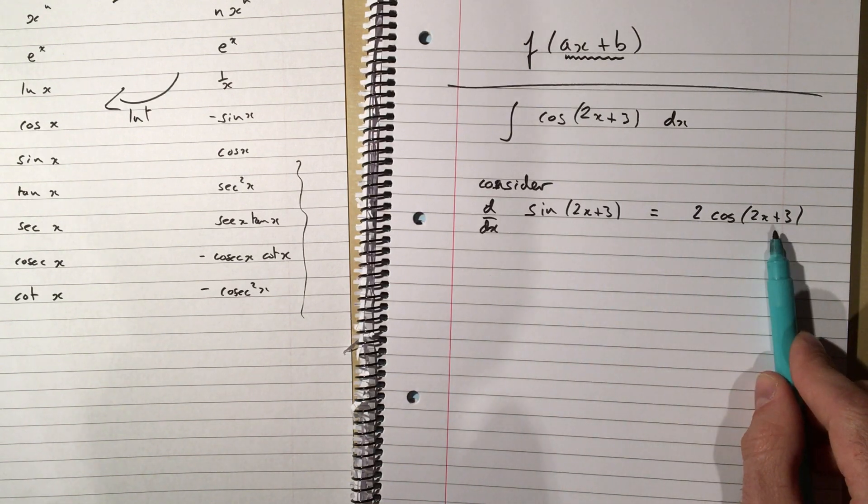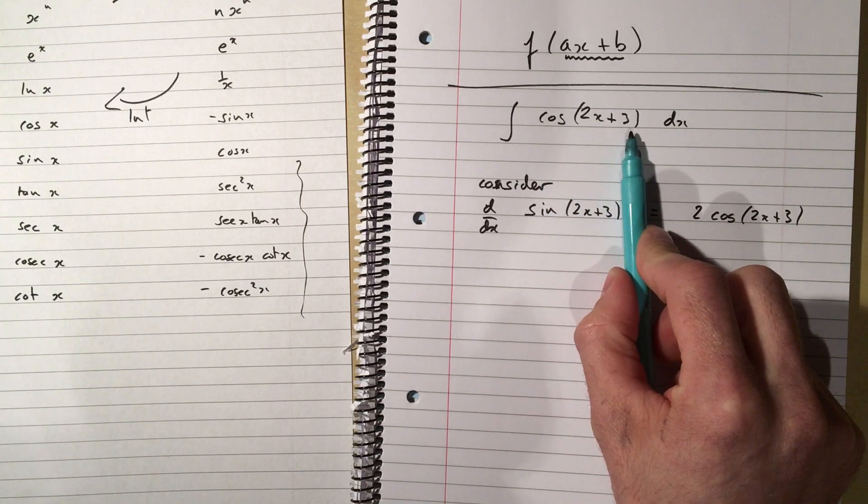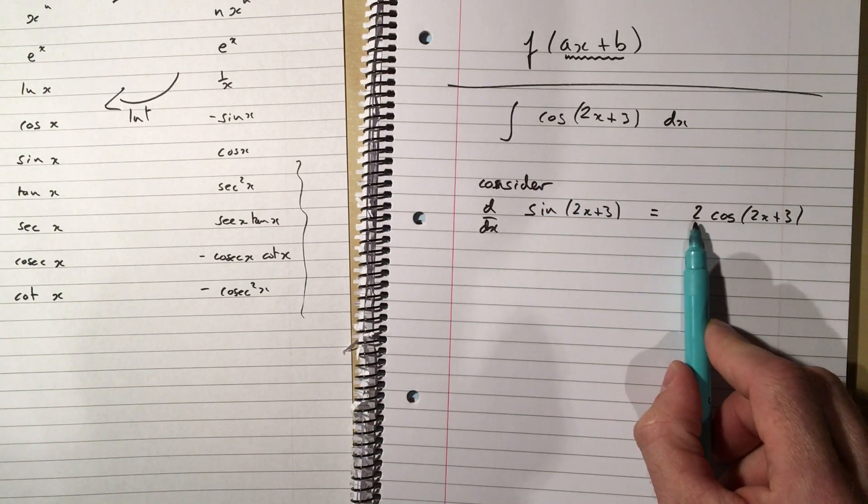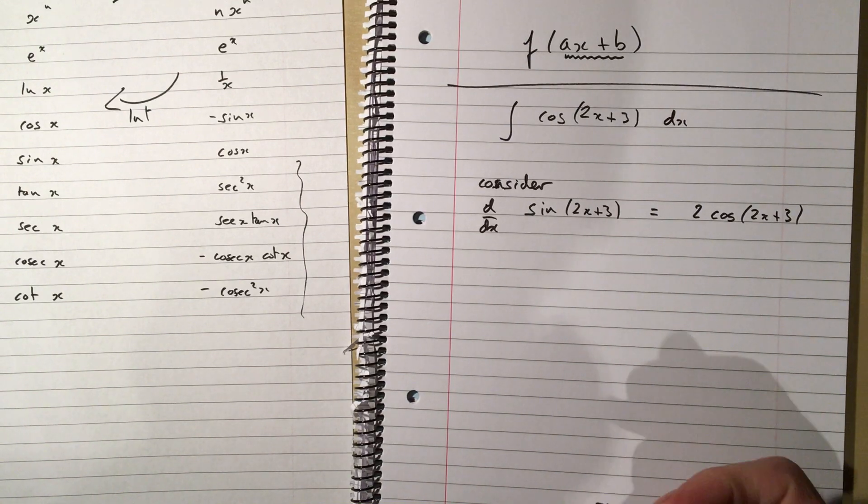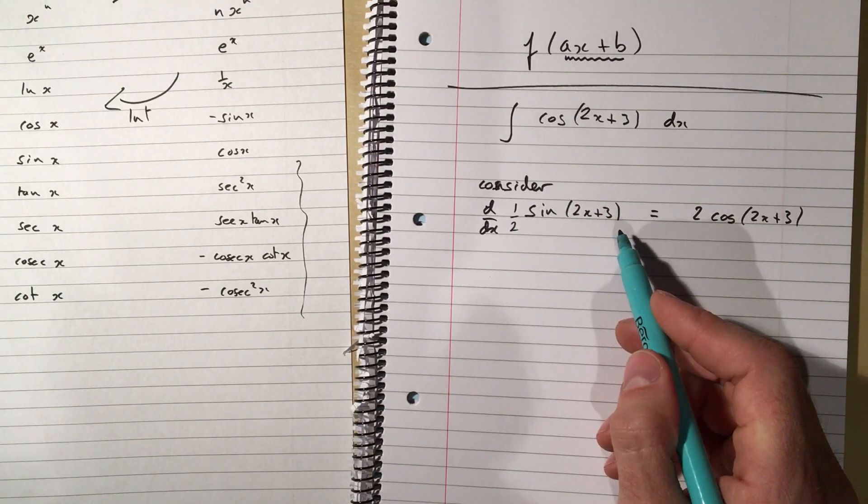So the derivative of that is that, well we want a function whose derivative is cos of 2x plus 3. Sine of 2x plus 3 is so close, there's just a 2 in the front of it, which is a shame. Well what if I'd started by differentiating a half sine of 2x plus 3?